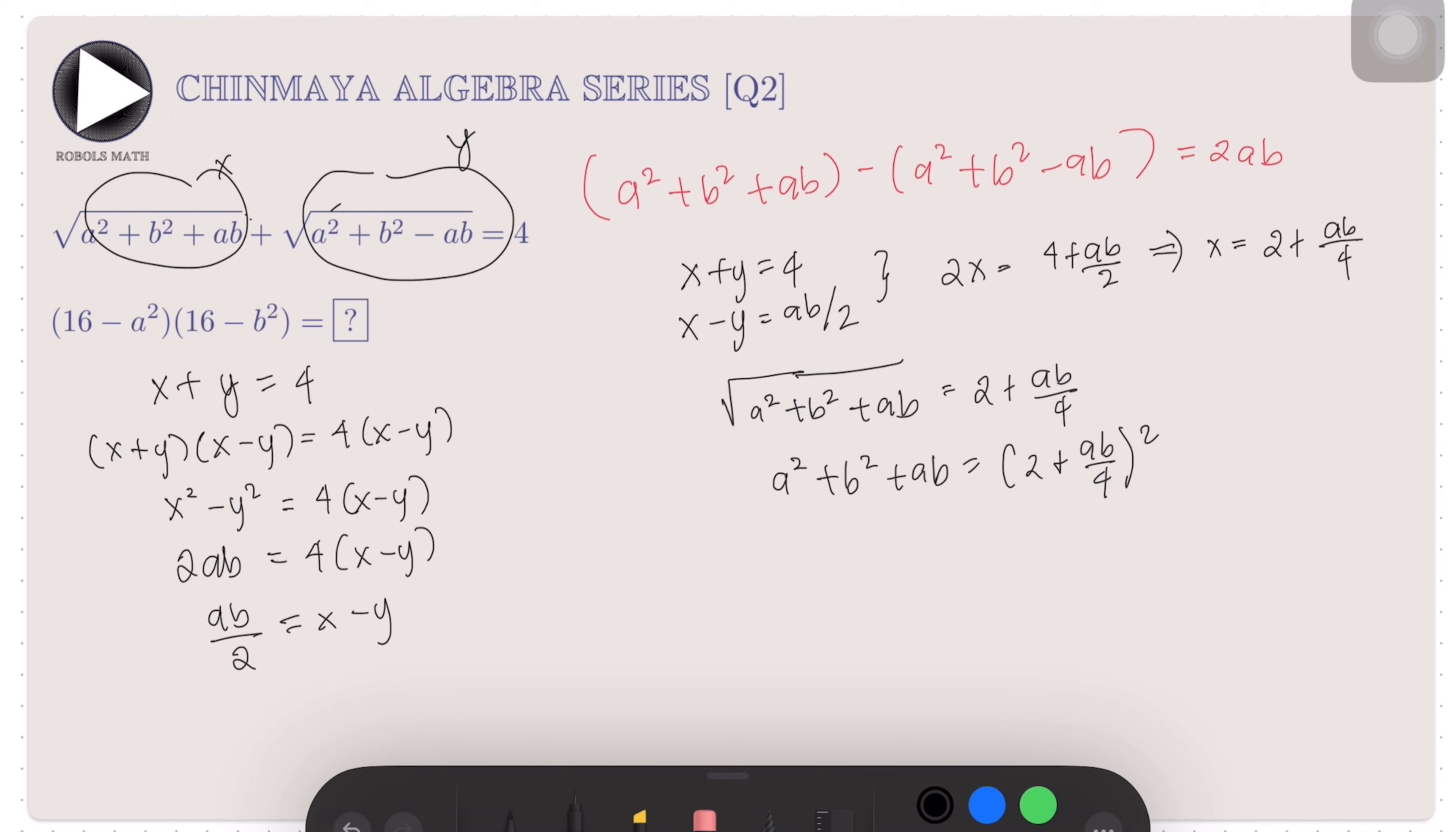Using the expansion for a perfect squared binomial, the right side becomes 4 + 2(2)(ab/4) + (ab/4)². When we simplify, we get 4 + ab + (a²b²/16). Therefore, we have here a relationship between a² + b² + ab and something in the right side with ab and a²b².